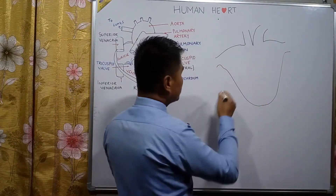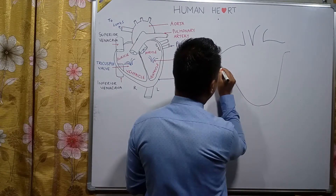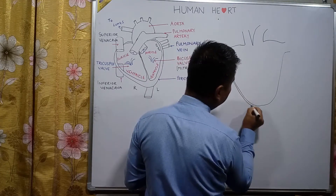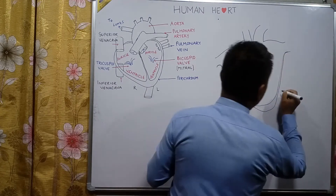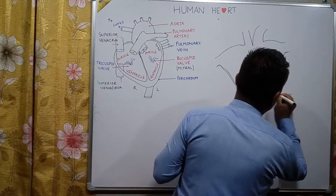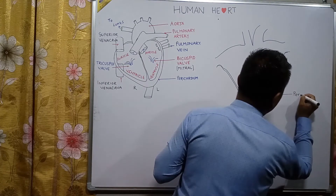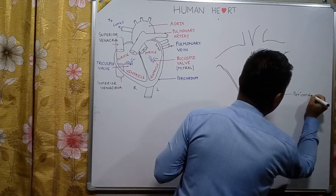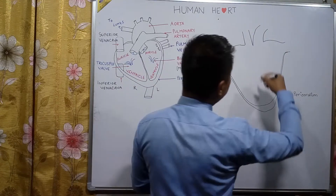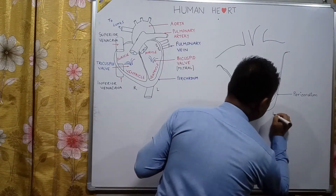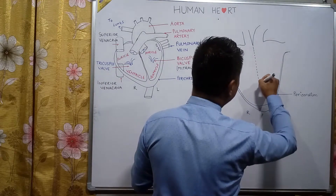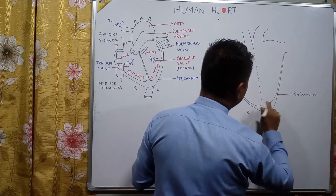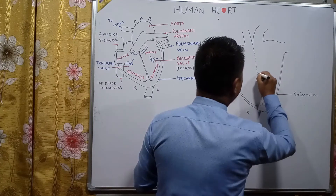This is the human heart and the covering of the human heart is known as pericardium — P-E-R-I-C-A-R-D-I-U-M. The human heart is divided into left side and right side with the help of a thick muscular sheet which is known as the septum.